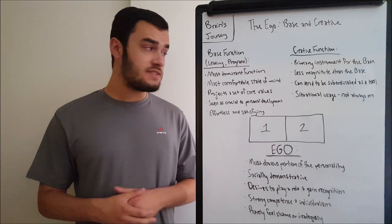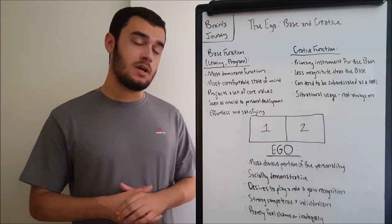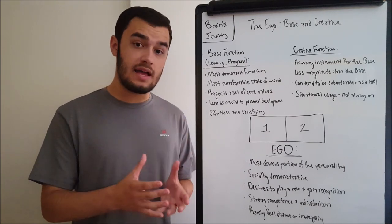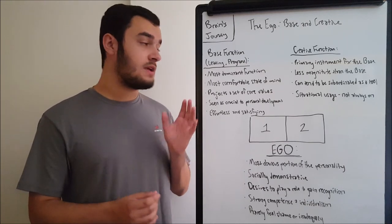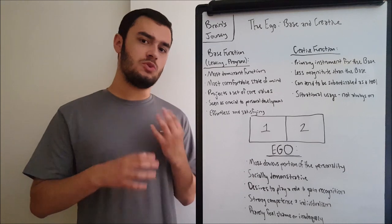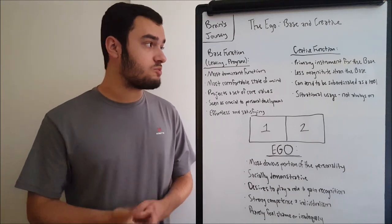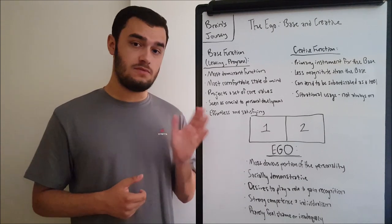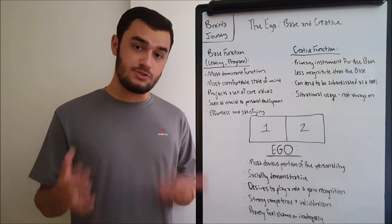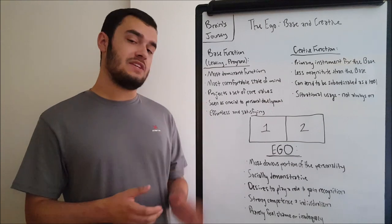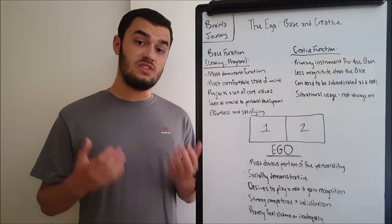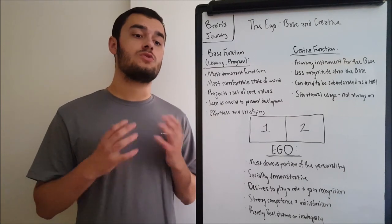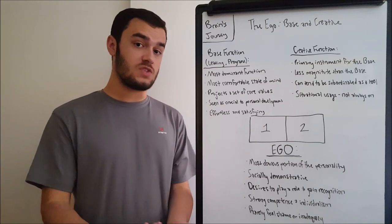So moving on from the base, we have the creative function. And the creative function is a primary instrument for the base. It is how we apply the base's activities. The base could be isolated on its own, doing its own things. But the creative is what is really going to be externalizing those conclusions that you form in the base function. So, for example, if you're an introvert, what you're going to be doing in the base function is going to be related to the self. And then the creative function would be extroverted. It would be externalizing those conclusions that you form with the base to society.